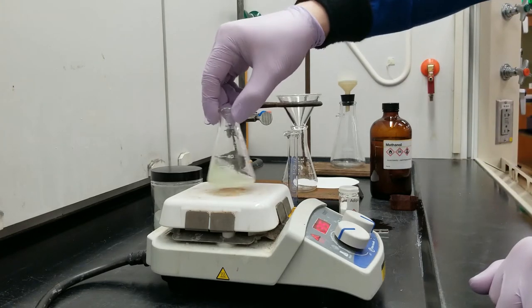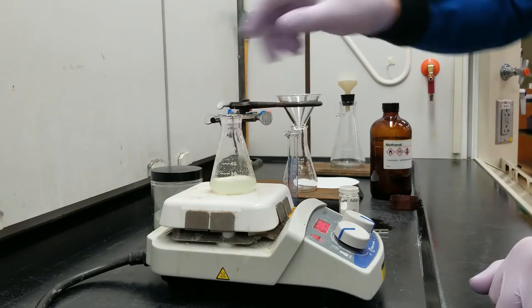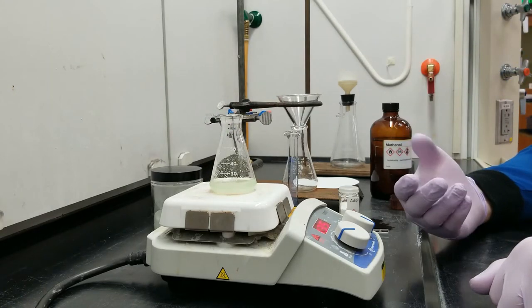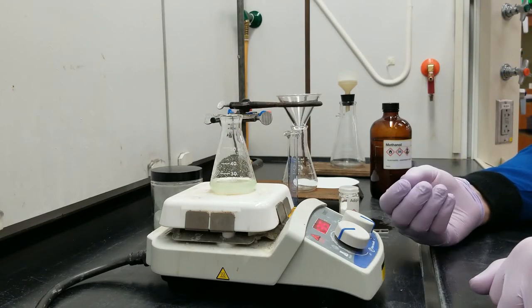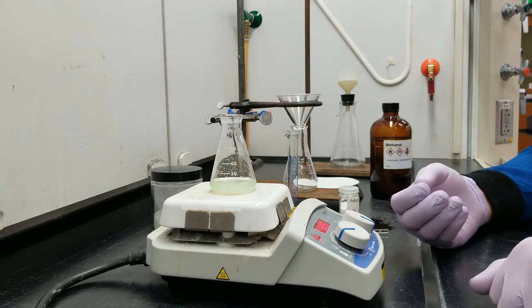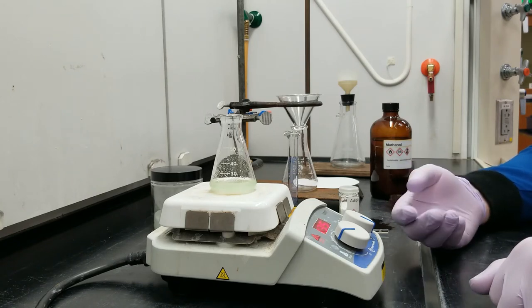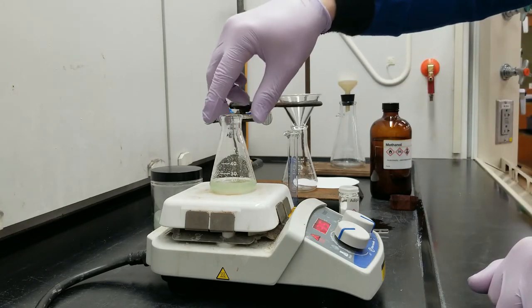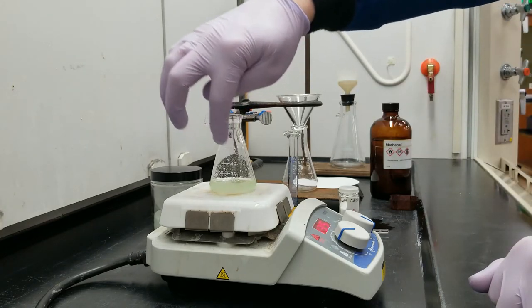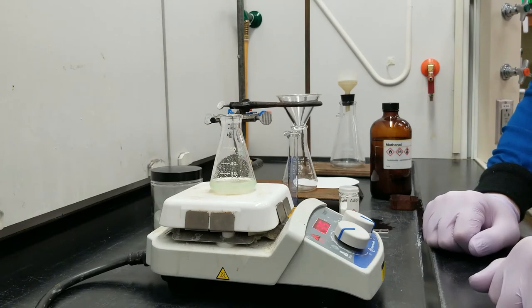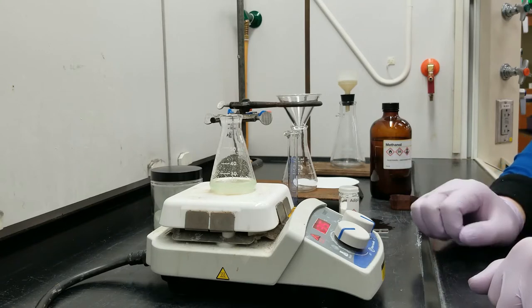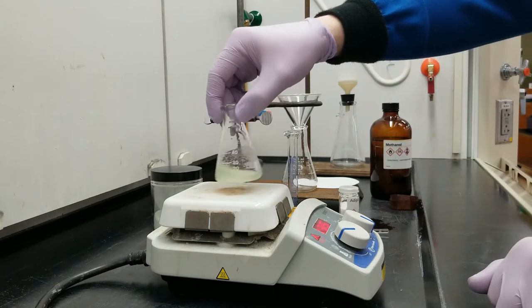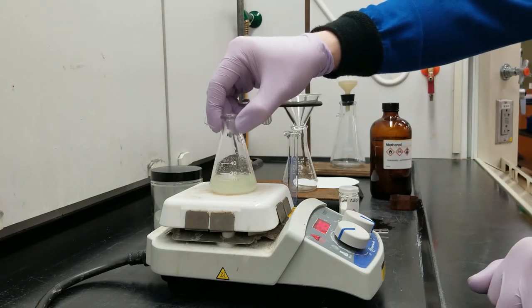By heating this up to a reflux we can make sure that when we filter this all of the adipic acid will fall through the filter along with the methanol. I've got little bits and chunks of sand on the side of my glass here and that is going to be left behind because no matter how much I heat this up that is not going to dissolve through this methanol.